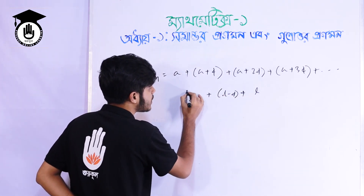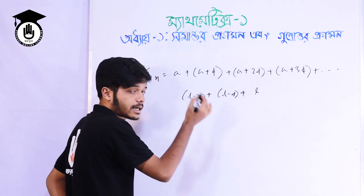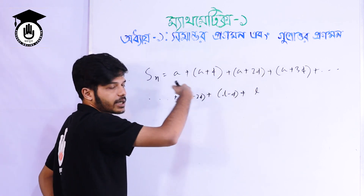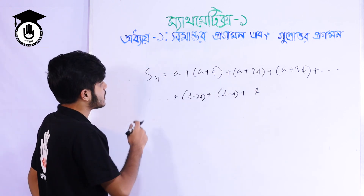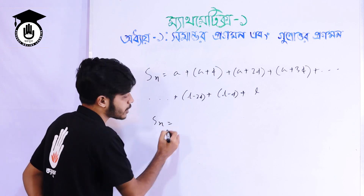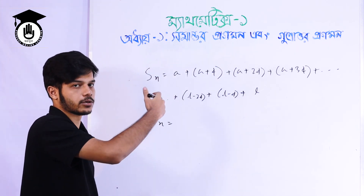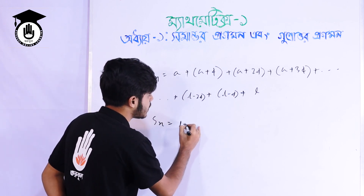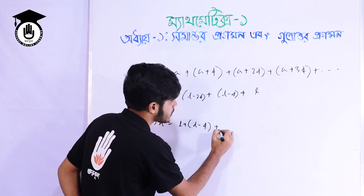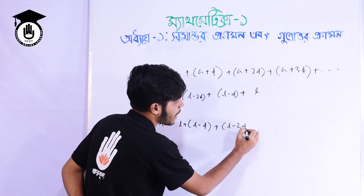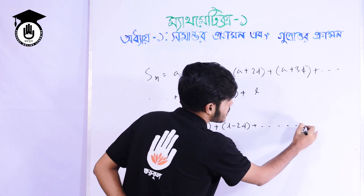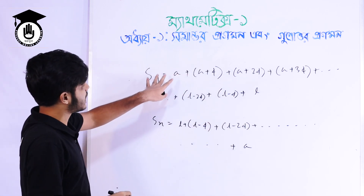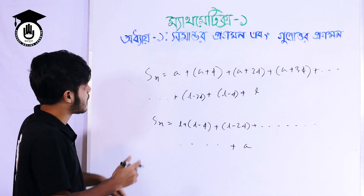So when I do 2d minus, I will get 0. So when I start with this L, then L minus D, then L minus 2d, and then I will get 0. I will write it this way.